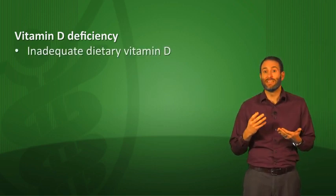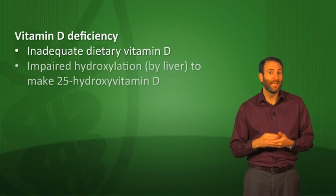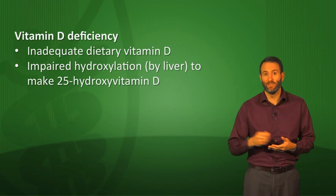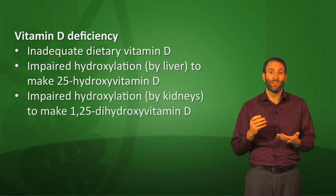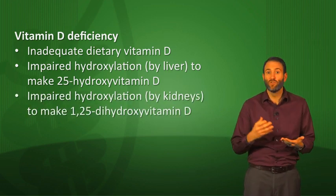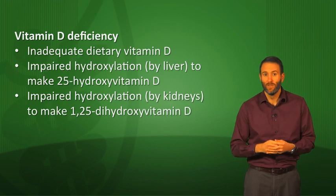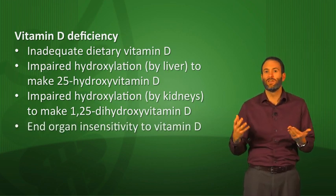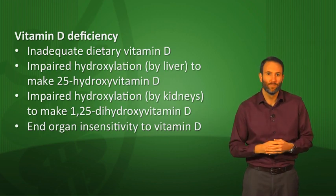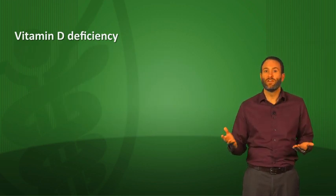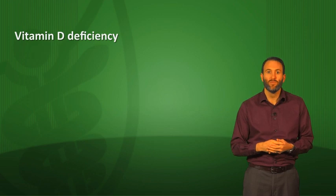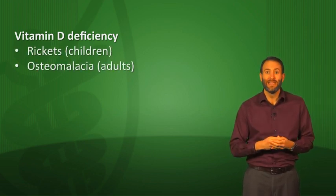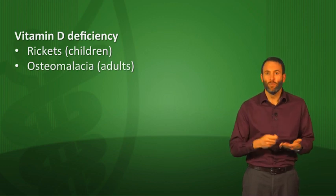The four mechanisms are: (1) inadequate dietary vitamin D; (2) impaired hydroxylation by the liver to make 25-hydroxyvitamin D; (3) impaired hydroxylation by the kidneys so you can't make 1,25-dihydroxyvitamin D; or (4) end-organ insensitivity to vitamin D. The end result of vitamin D deficiency or resistance is rickets in children and osteomalacia in adults — both demineralization problems of the bone.